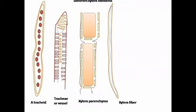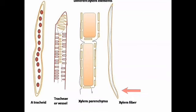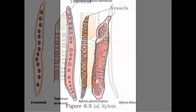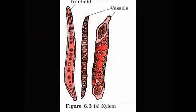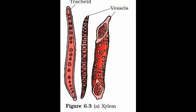Xylem is a complex tissue made of tracheids, vessels, xylem parenchyma and xylem fibers. Of these, all are dead cells except xylem parenchyma. The movement of water and minerals occurs through tracheids and vessels.